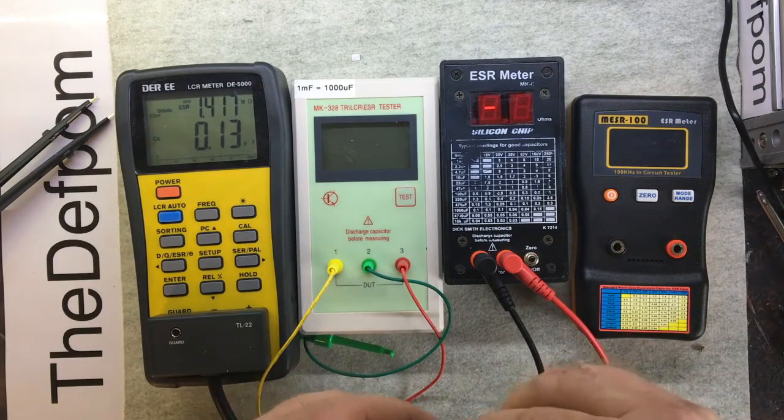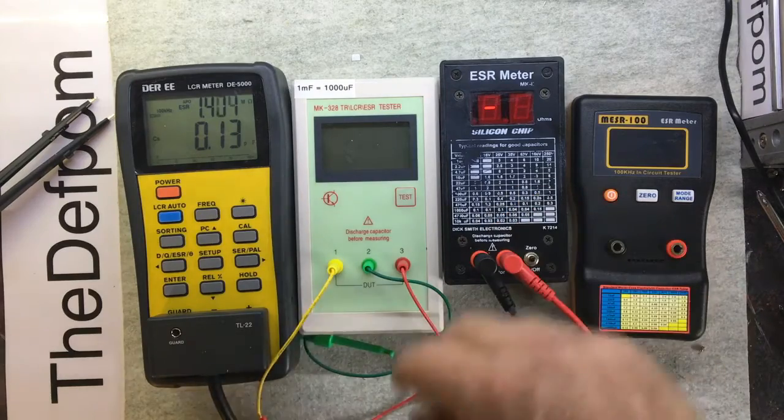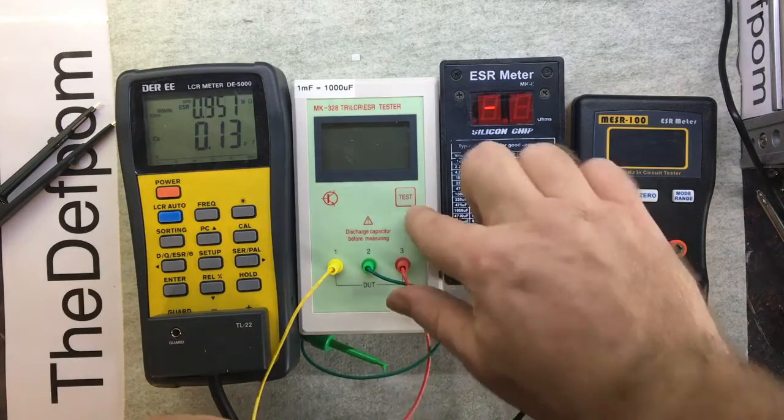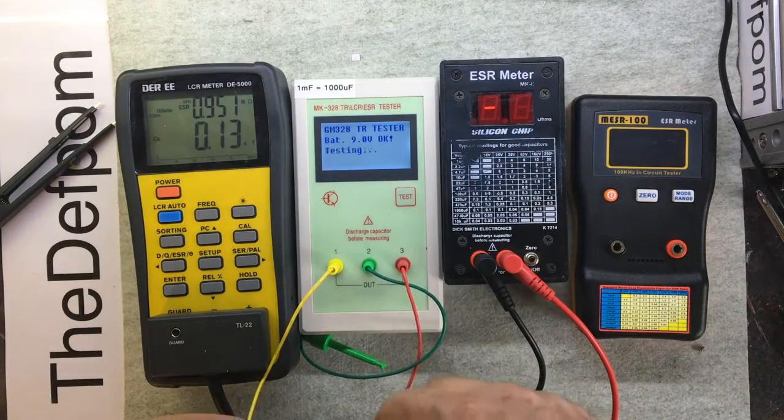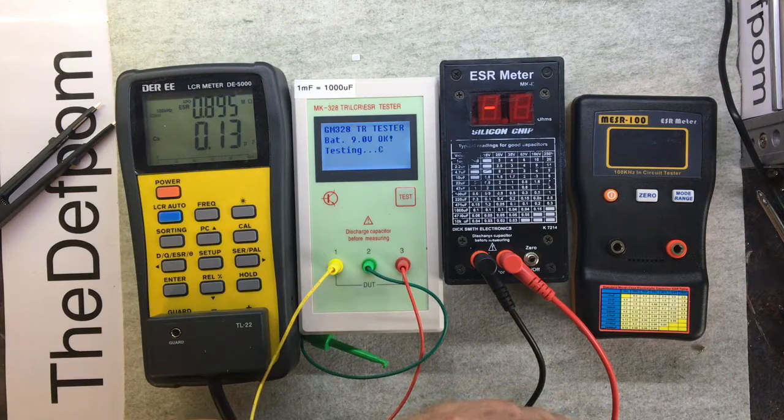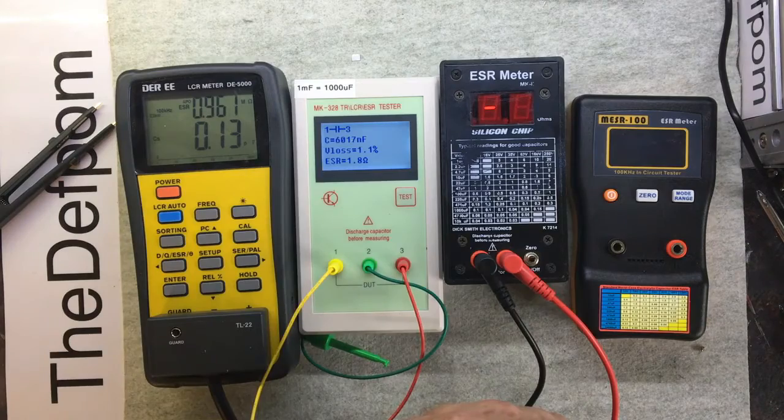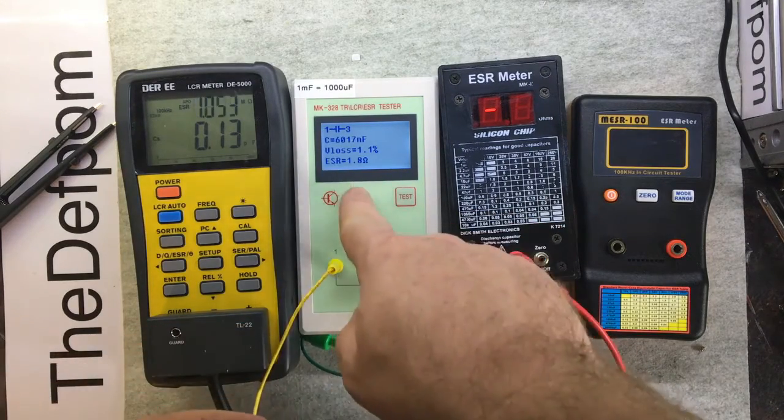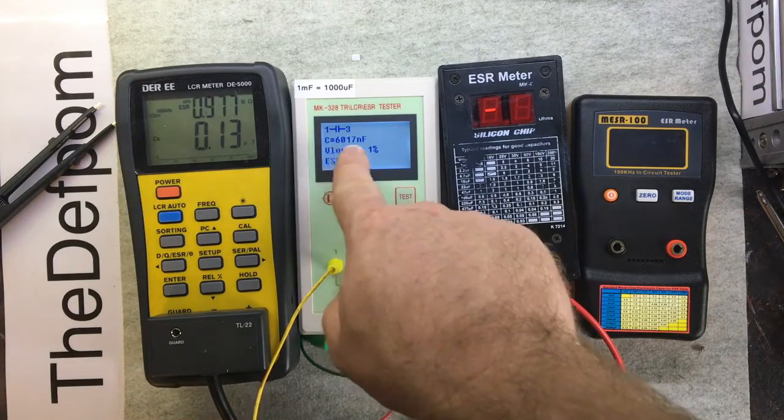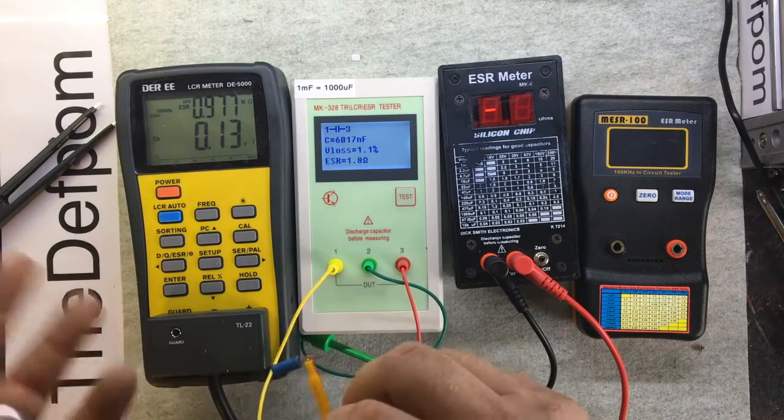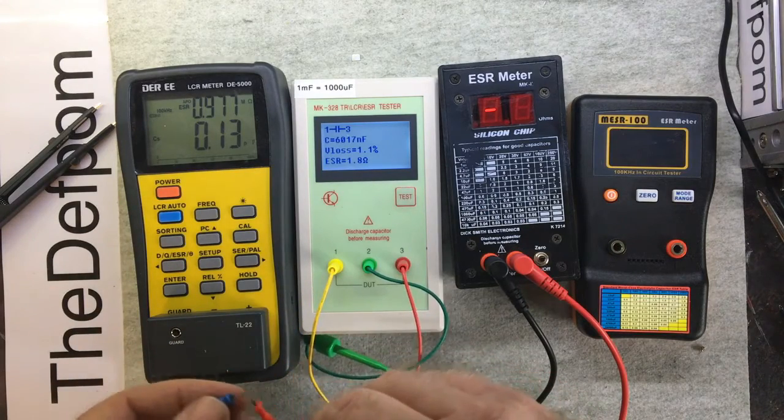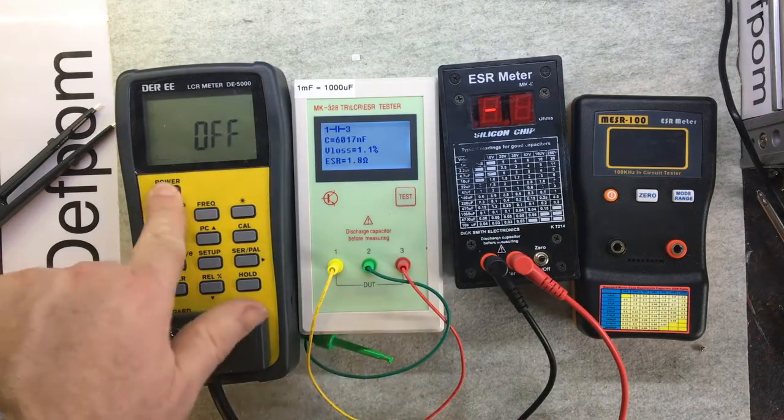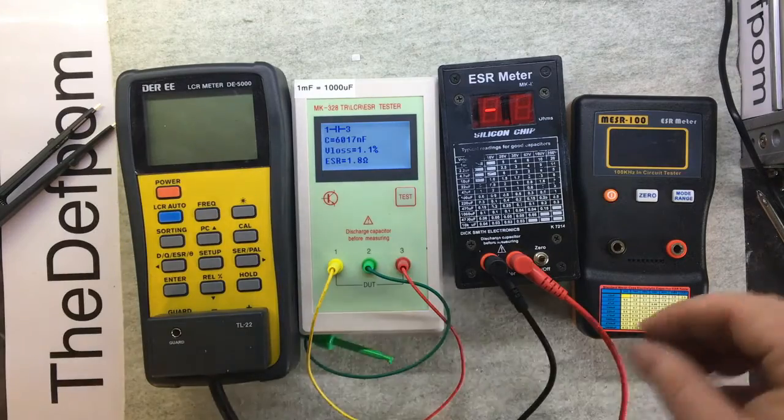Let's hook this one up again to verify and repeat results. There we go, ESR 1.8. That's probably what I should have done before, hook it up before I turn the thing on. That's saying 6 microfarads. Well, it's not really 6 microfarads is it? All right, so there's that little video.